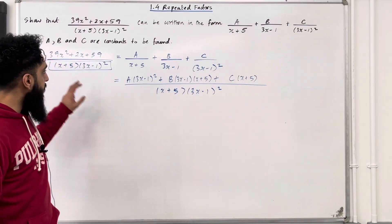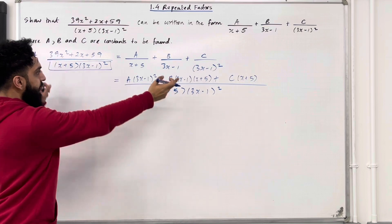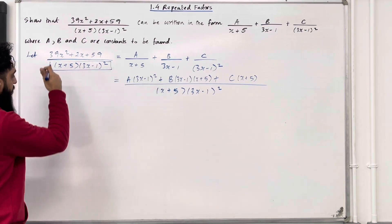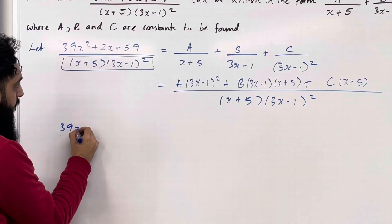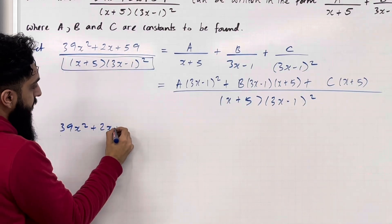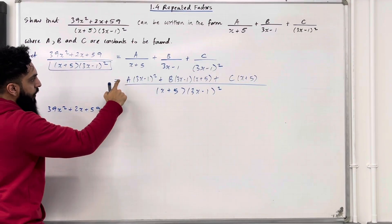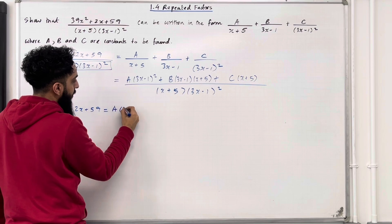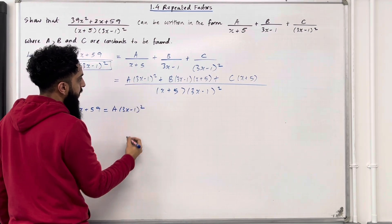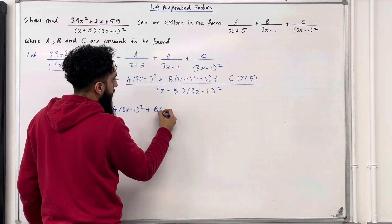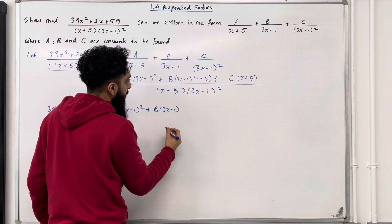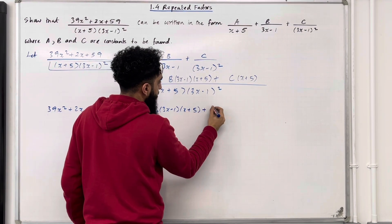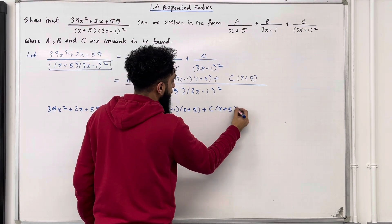Since this fraction is equal to the combined fraction, we can set the numerators equal to each other: 39x² + 2x + 59 = A(3x − 1)² + B(3x − 1)(x + 5) + C(x + 5).